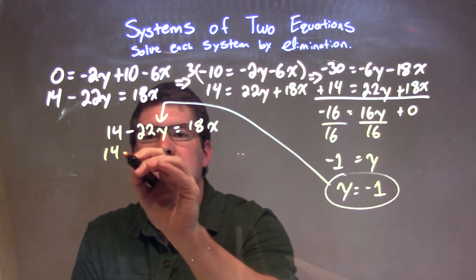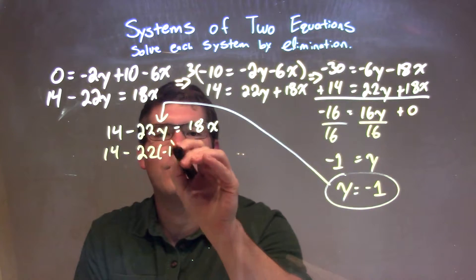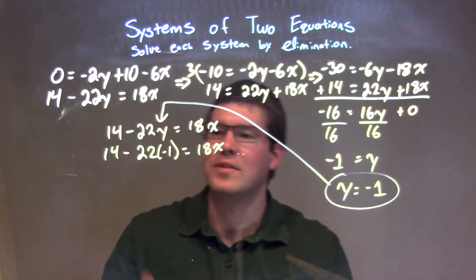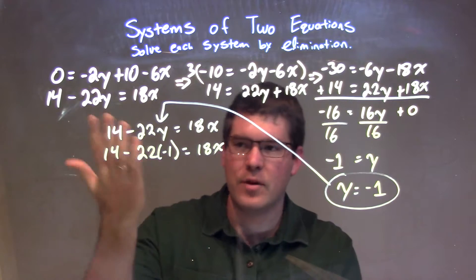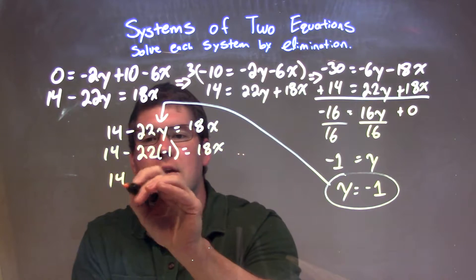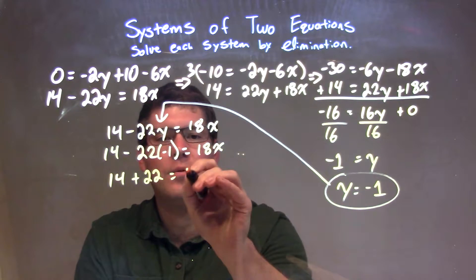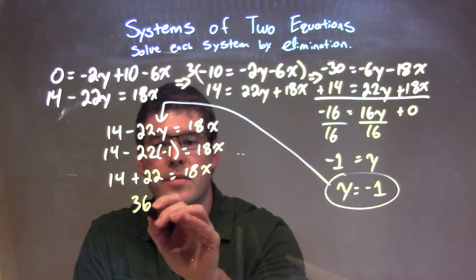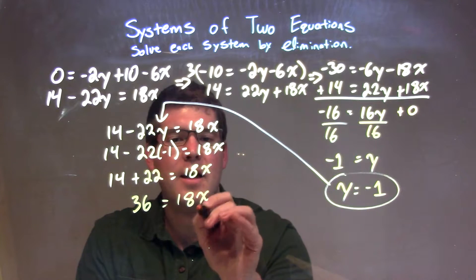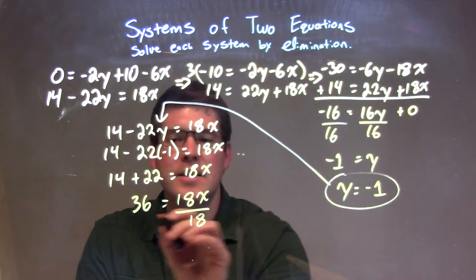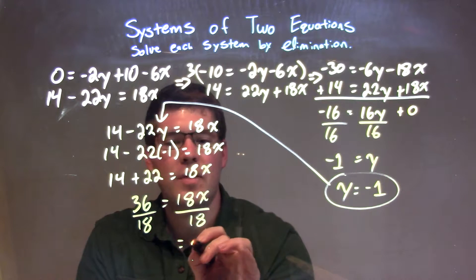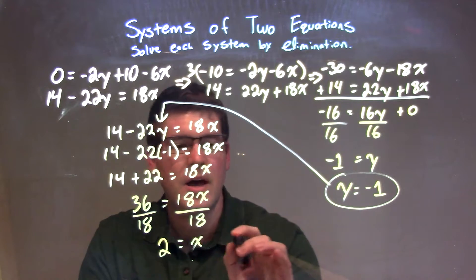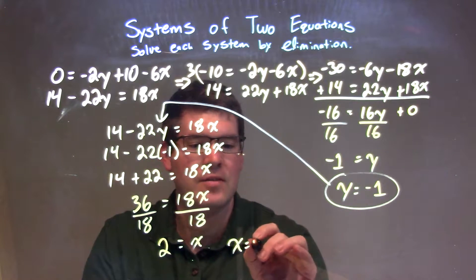I have 14 minus 22 times negative 1 equals 18x. 22 times negative 1 is positive 22. So we have 14 plus 22 equals 18x. 14 plus 22 is 36 equals 18x. I'm going to divide by 18 on both sides, leaving me with x by itself, and 36 divided by 18 is just 2. If we want to write x first, we can: x equals 2.